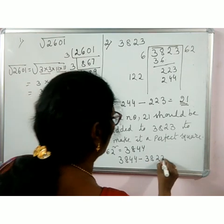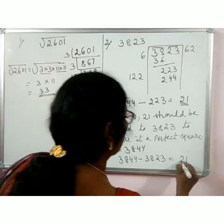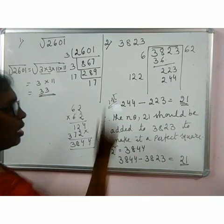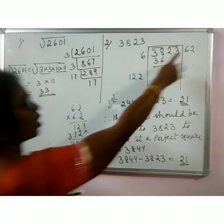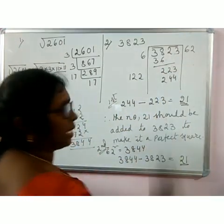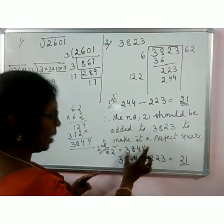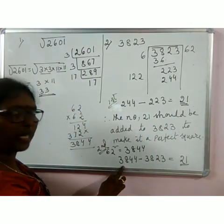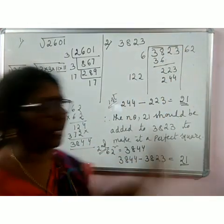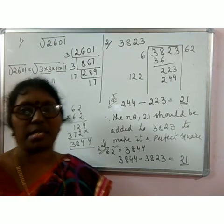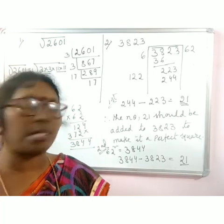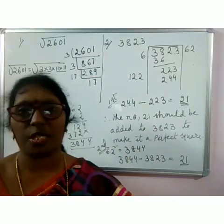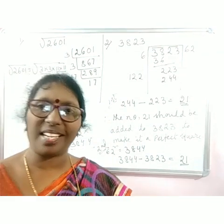Either way you get the same answer: 21. This is the first method and this is the second method. From the quotient 62, you do 62² = 3844, then 3844 minus the original number 3823 gives you 21 — the number to be added. If you add 21 to 3823, it becomes 3844, a perfect square, and you get remainder 0. So for both questions, three bits each are given for practice. I gave you one example for each variety — please understand and start doing practice exercise one. Thank you, wish you all the best.